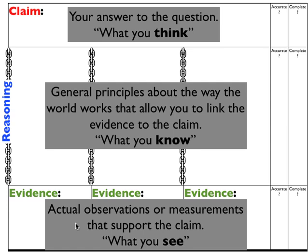Next is the evidence. It's the foundation of science, which is why it's at the bottom. These are the actual observations or measurements that really support our claim — it's what I see when I get to the crime scene. Each box of evidence needs to be linked to the claim with reasoning. Reasoning is the general principles about the way the world works — scientific principles, laws of physics — that allow us to link the evidence to the claim.